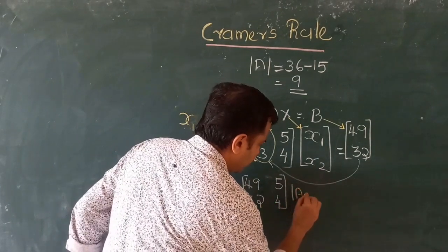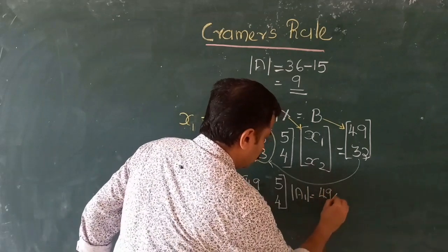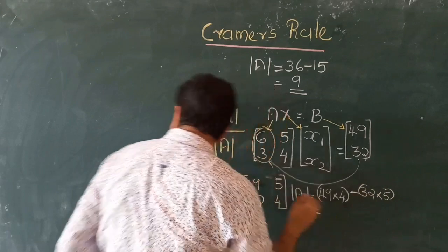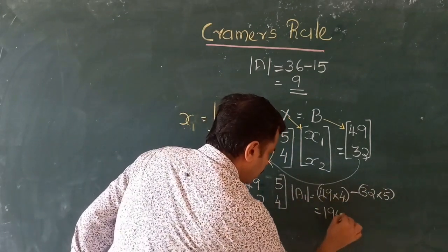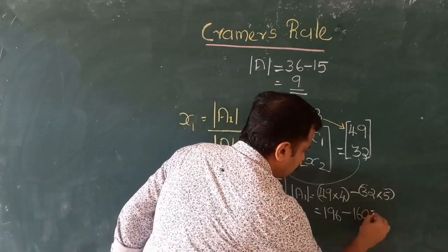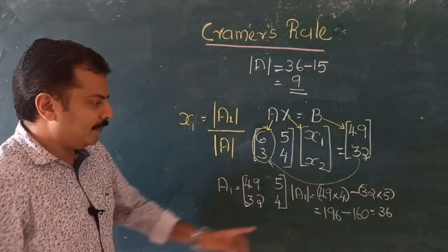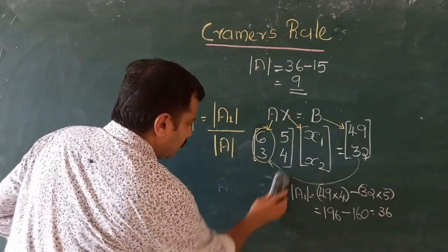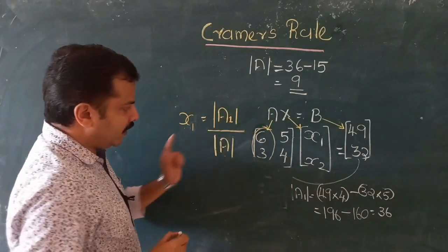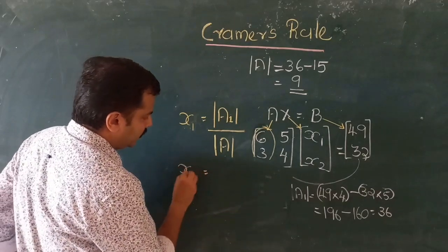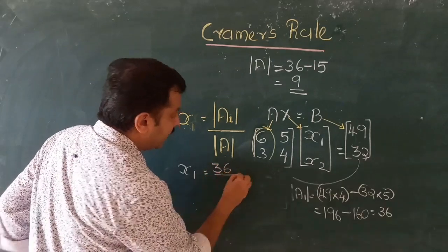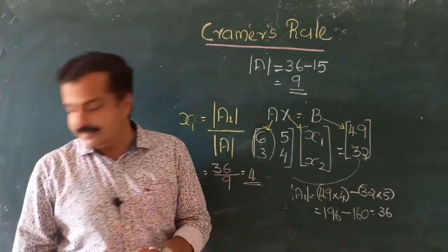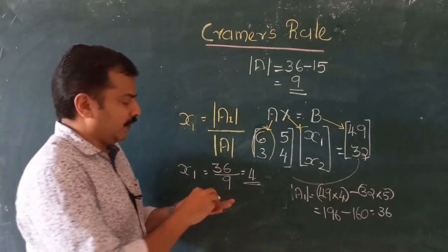The determinant of A1 is 49 times 4 minus 32 times 5, which equals 196 minus 160, giving us 36. So the determinant of A1 is 36. Therefore, x1 equals the determinant of A1 divided by the determinant of A, which is 36 divided by 9, so x1 equals 4.